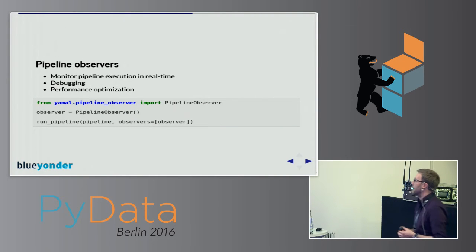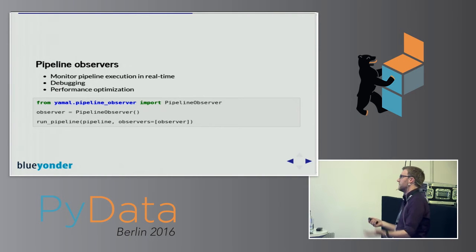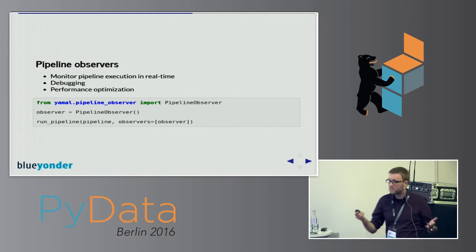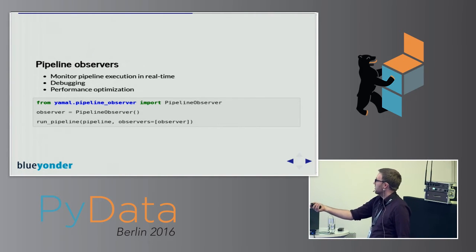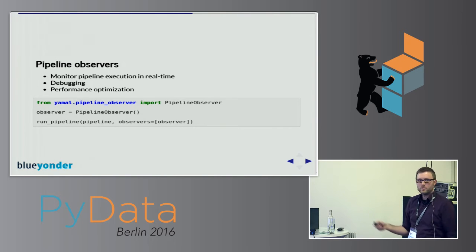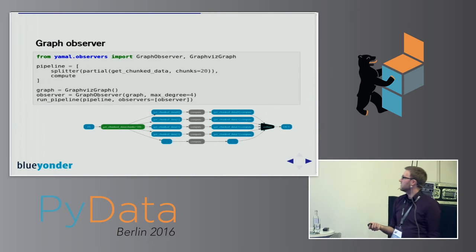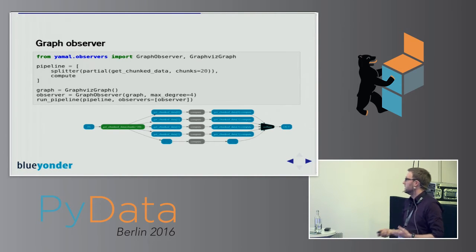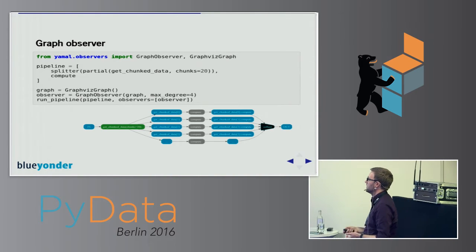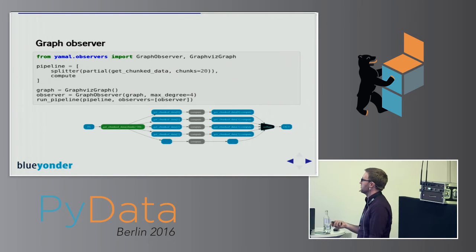A very nice tool in Yamal are pipeline observers — objects that monitor the execution of a pipeline and get informed whenever something happens, which is very useful for debugging or performance optimization. You define your pipeline observer object and pass it to a list of observers given to the runPipeline function, and each observer gets notified whenever a function is called. One of the observers is the graph observer — all those pipeline visualizations I showed are generated automatically using this, producing a Graphviz dot file that you can render.